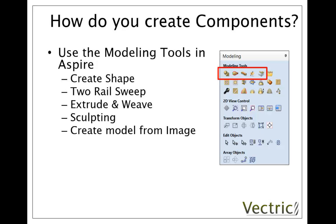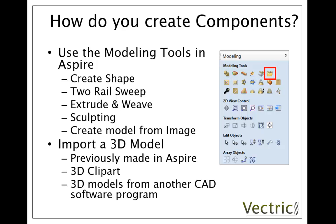An alternative to building shapes from 2D data in the software is to import an existing 3D model. This may be something you've previously made in Aspire and saved out, a piece of 3D clip art that you've purchased or downloaded from the internet, or a 3D model that you've created in another CAD software program. There are many different software programs available that can create a 3D object and ultimately you might want to bring those into Aspire to finish editing, combine with other objects, and then eventually create toolpaths to cut it on your CNC.